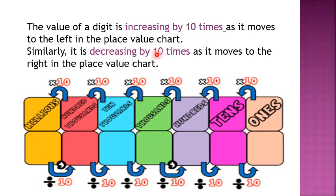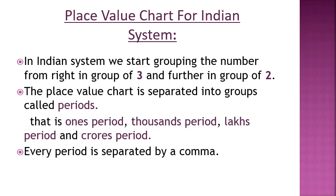Similarly, the value decreases by 10 times as it moves to the right in the place value chart, meaning we divide by 10 when moving to the right. Remember this important point, children. You are going to learn two types of place value chart. The first is the place value chart for the Indian system. In the Indian system, we start grouping the number from the right in groups of three and further in groups of two. The place value chart is separated into groups called periods: the ones period, thousands period, lakhs period, and crores period. Every period is separated by a comma in the number.